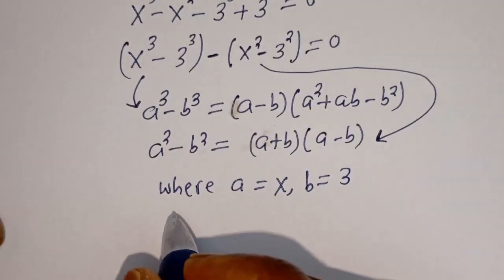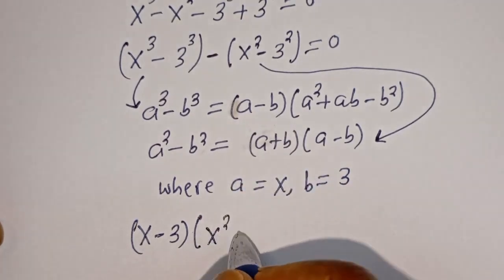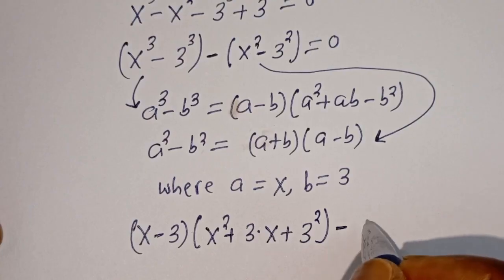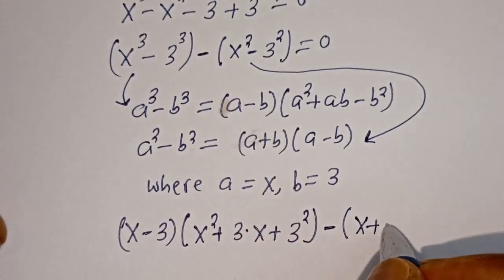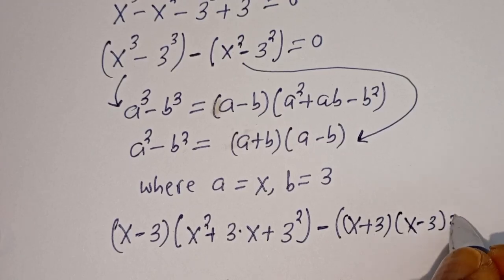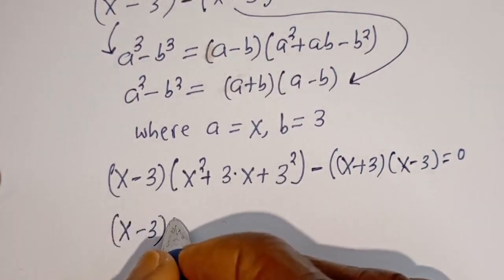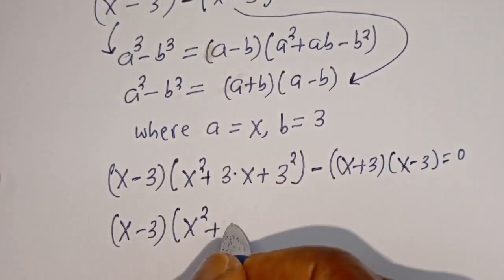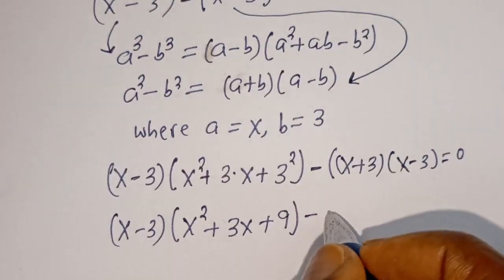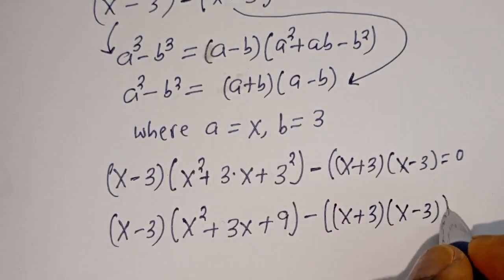Now let's substitute into this equation. We have S minus 3, bracket, S squared plus 3S plus 9, minus S plus 3 bracket S minus 3, equal to 0.